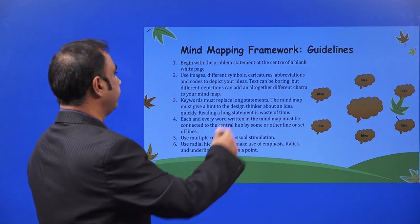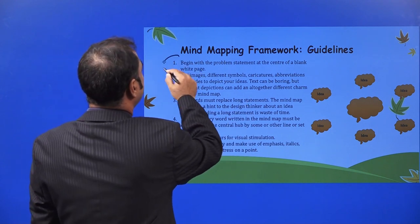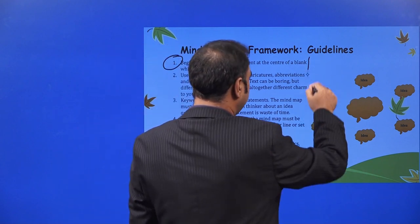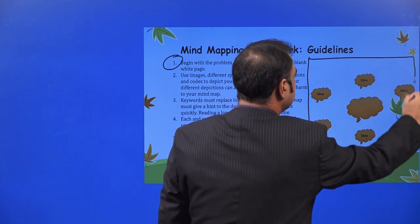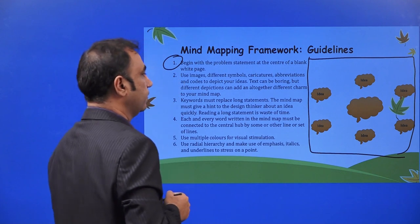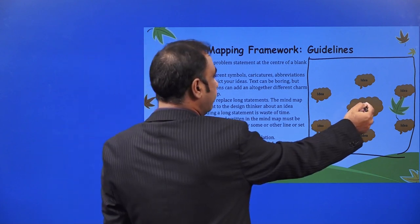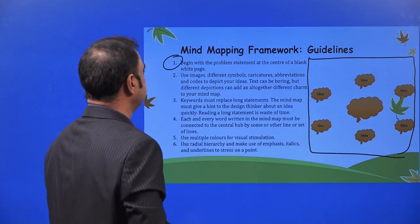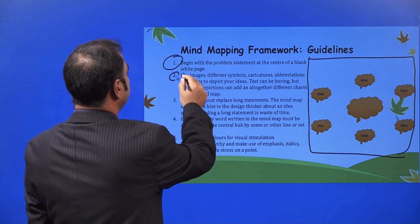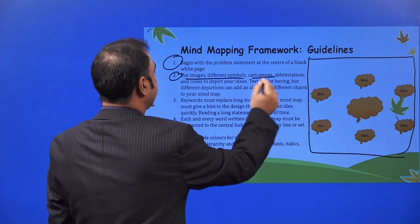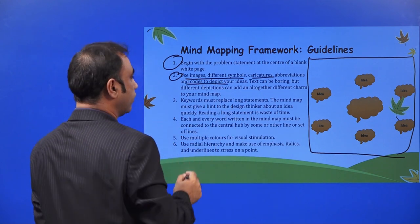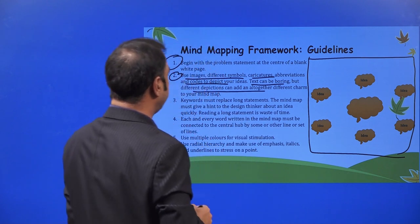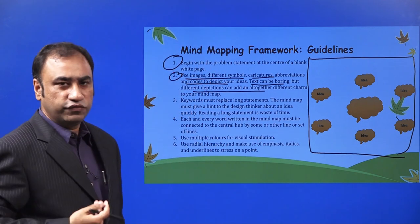Begin with the problem statement at the center of a blank white page. Write what problem you are trying to find a solution for in the center. Use images, different symbols, caricatures, abbreviations, and codes to depict your ideas. Text can be boring, but different depictions can add an altogether different charm to your mind map — you can use images as well, whatever you want to use.